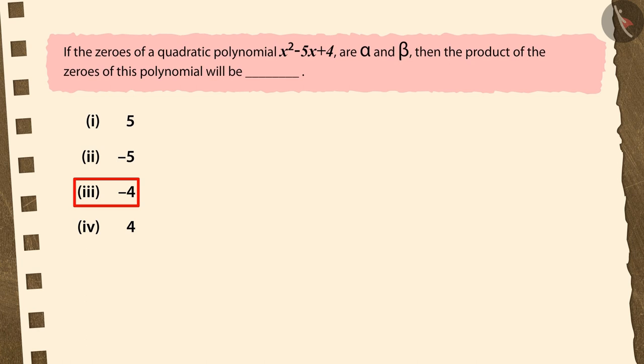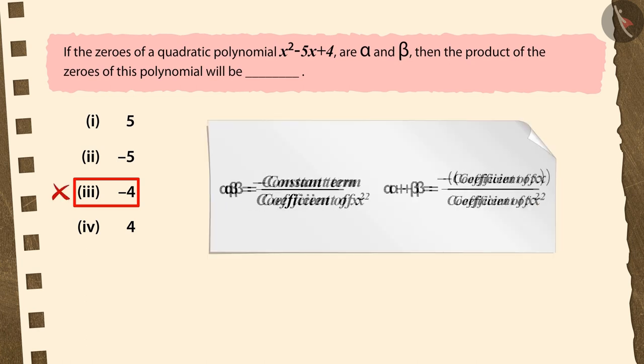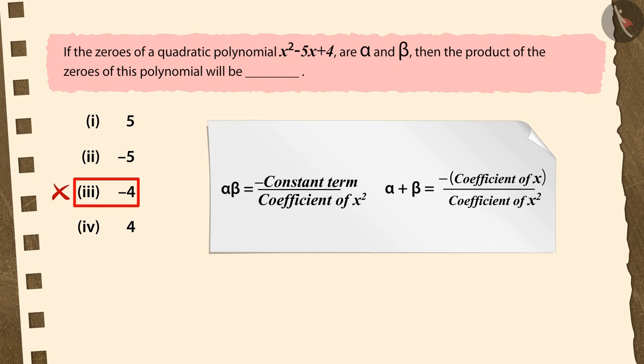If you have selected the third option, then too your selection is not correct. The reason for this is the use of a negative sign in the formula for the product of zeros.